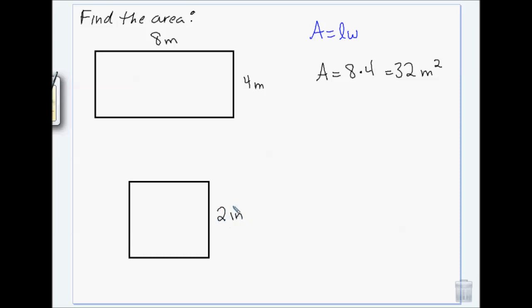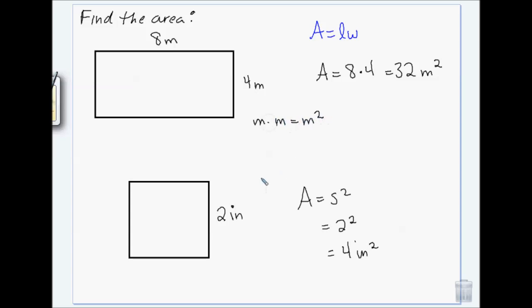Two inches — area is side squared, so that's two squared, which is four square inches. The reason the units are squared is because we're doing meters times meters, that's meters squared — or here, two inches times two inches gives us four square inches. Does that make sense?